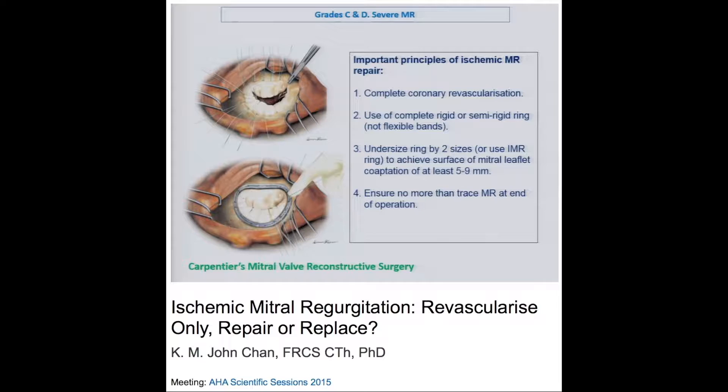This group of patients needs intervention. If we are to repair the mitral valve, the principles taught by Carpentier and Dion apply: complete revascularization, use a complete rigid or semi-rigid ring (not flexible bands), undersized by two sizes to achieve a co-optation length of at least 5 to 9 millimeters between anterior and posterior leaflets, and leave the operating theater with no more than trace MR at the end of the operation.